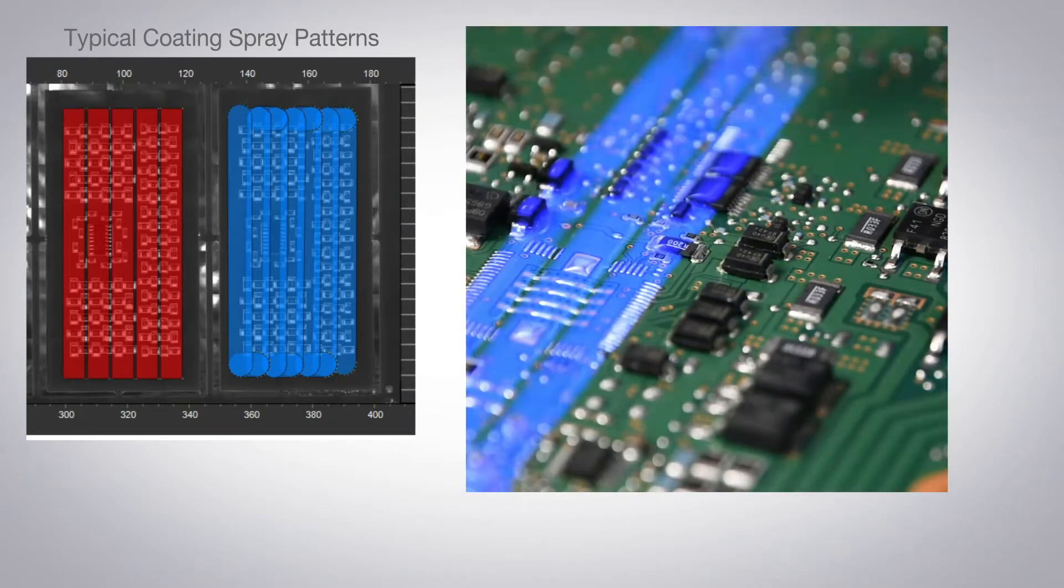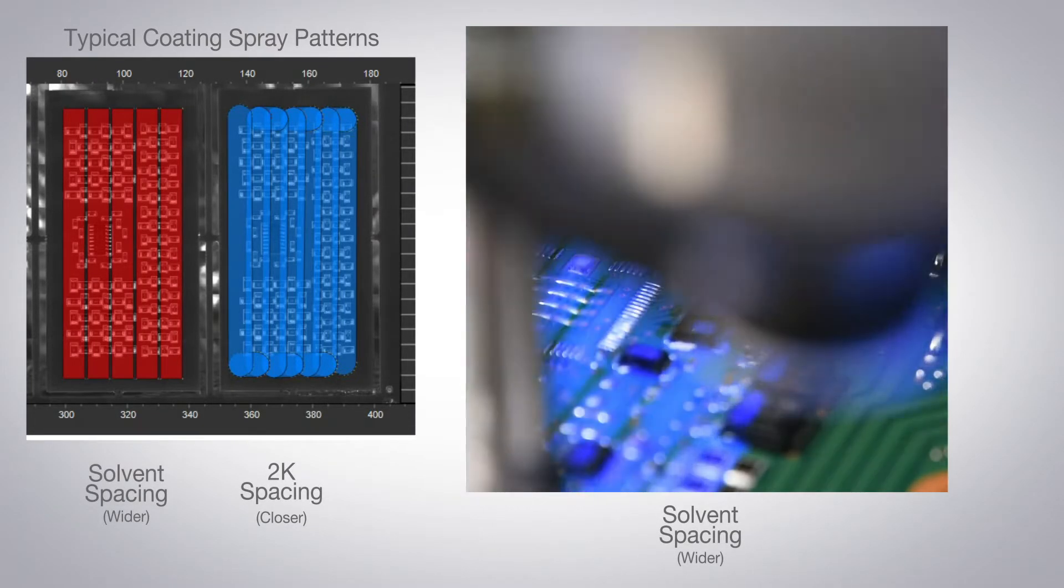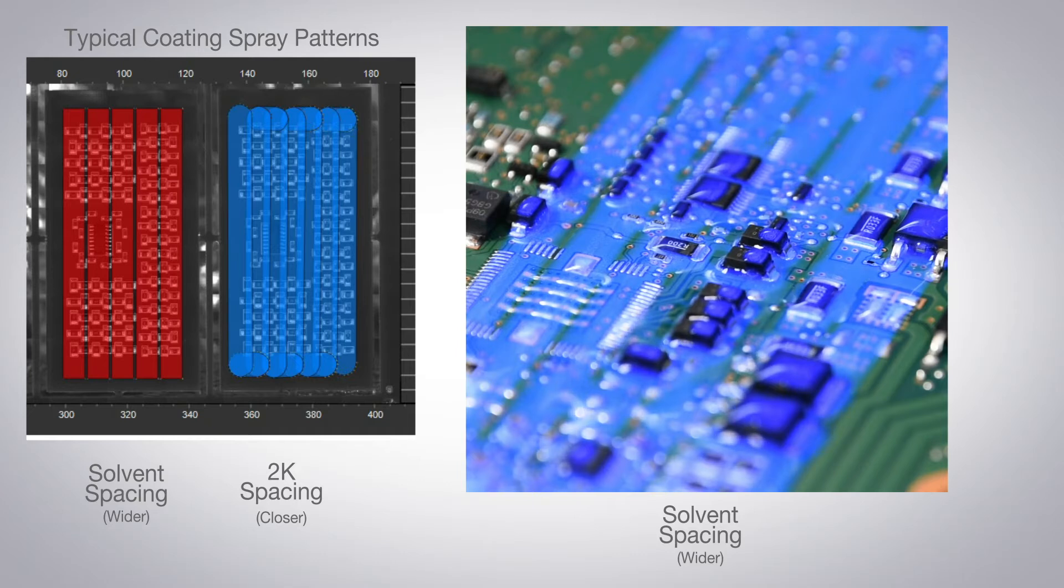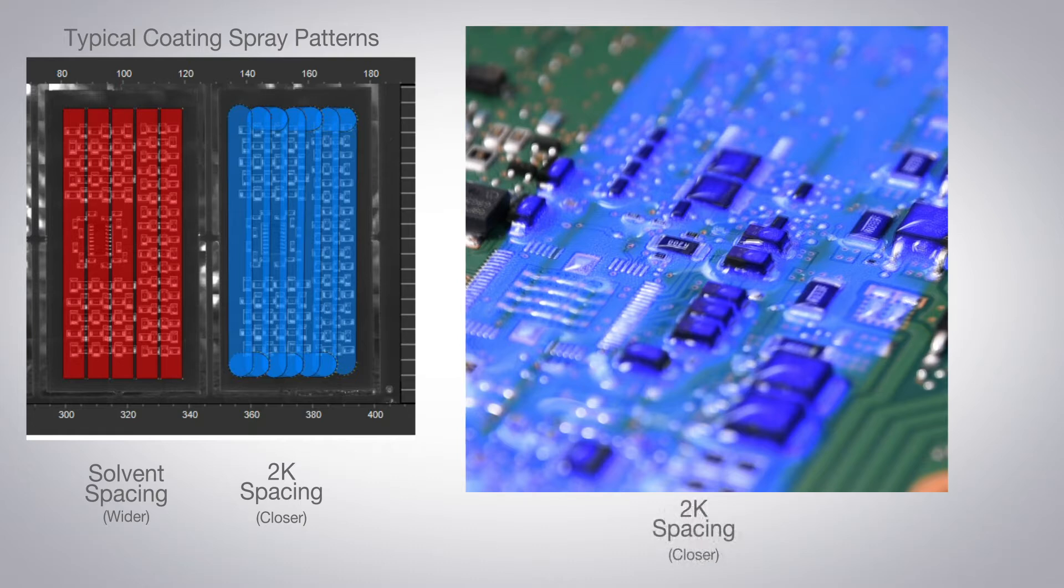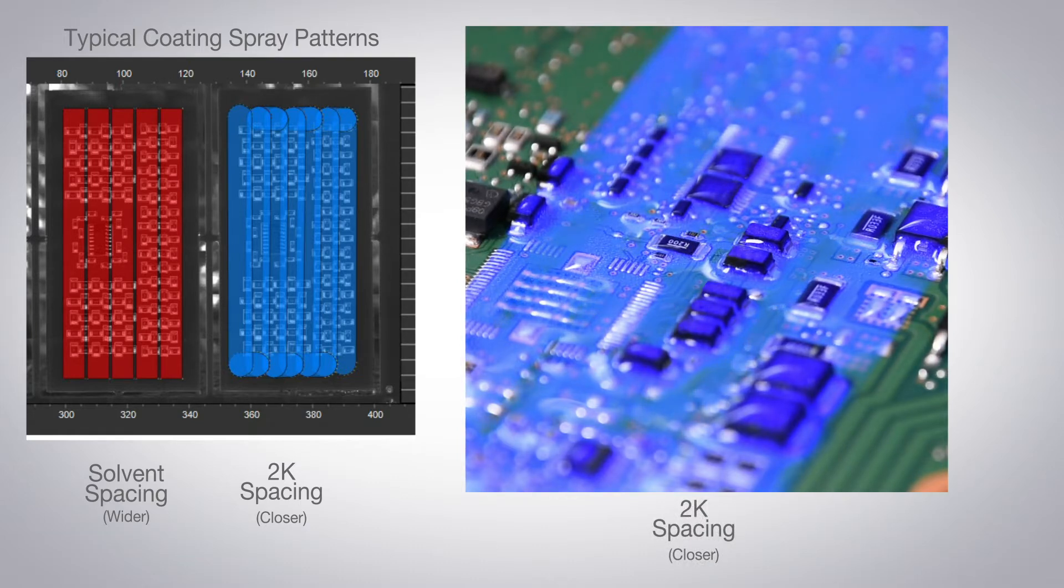Traditionally, solvent based coatings are applied with a minimum spacing between coating lines, usually placed next to each other without overlap, relying on the low viscosity and surface tension of the fluid to avoid coating misses and reduce the applied film thickness.